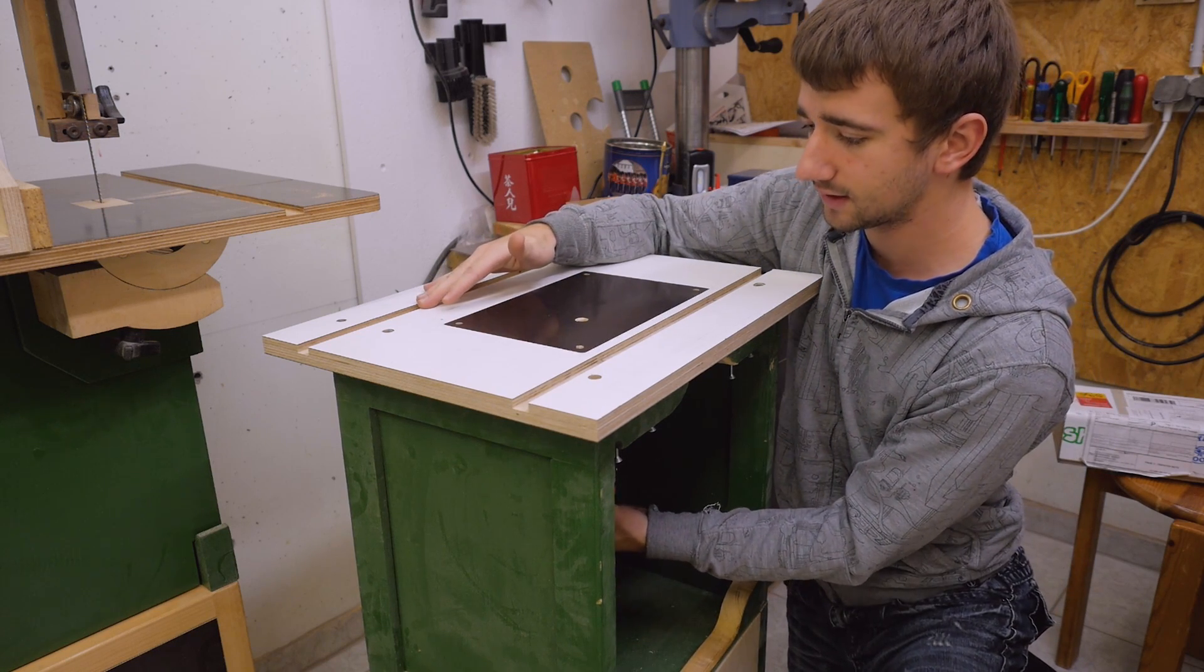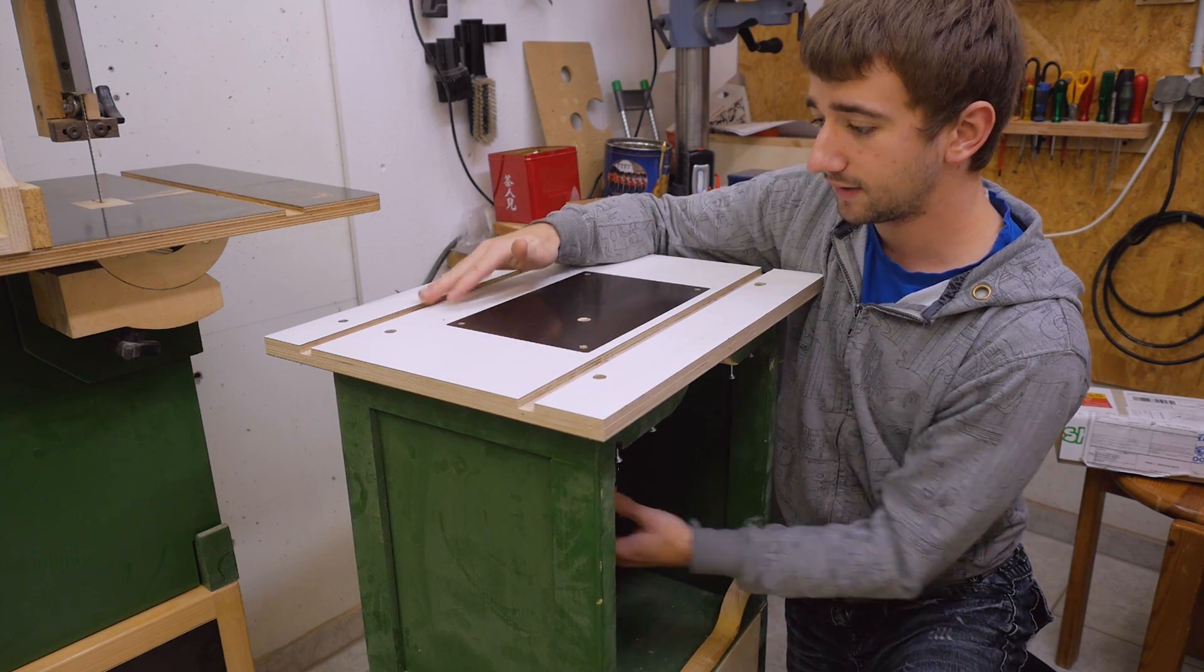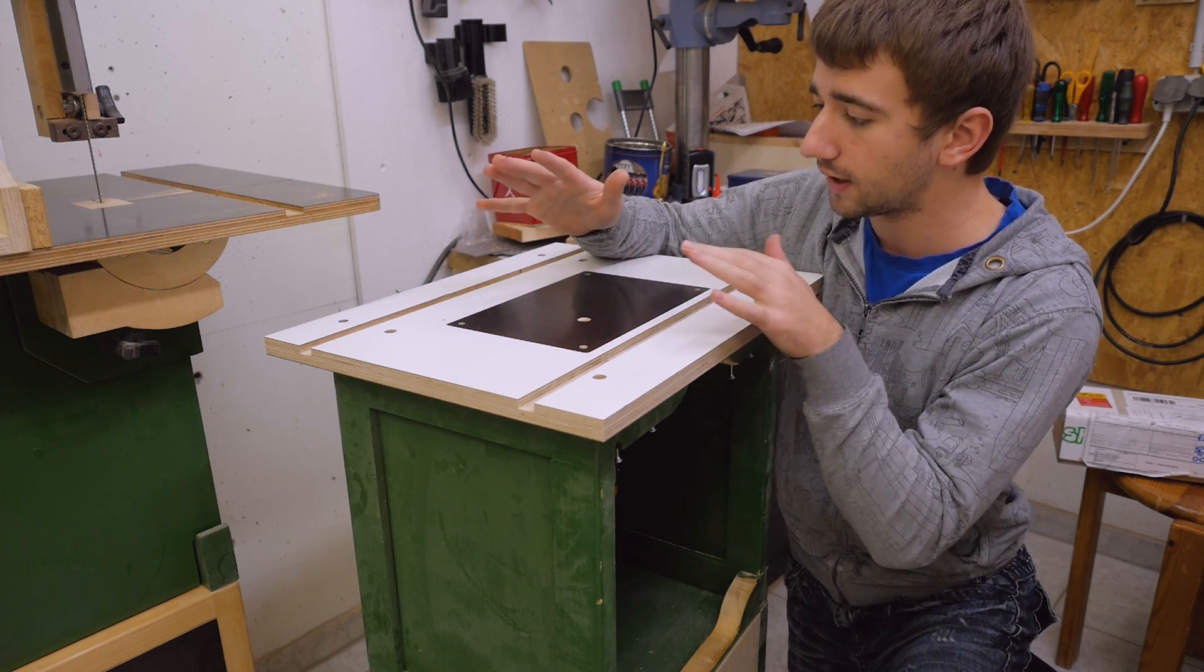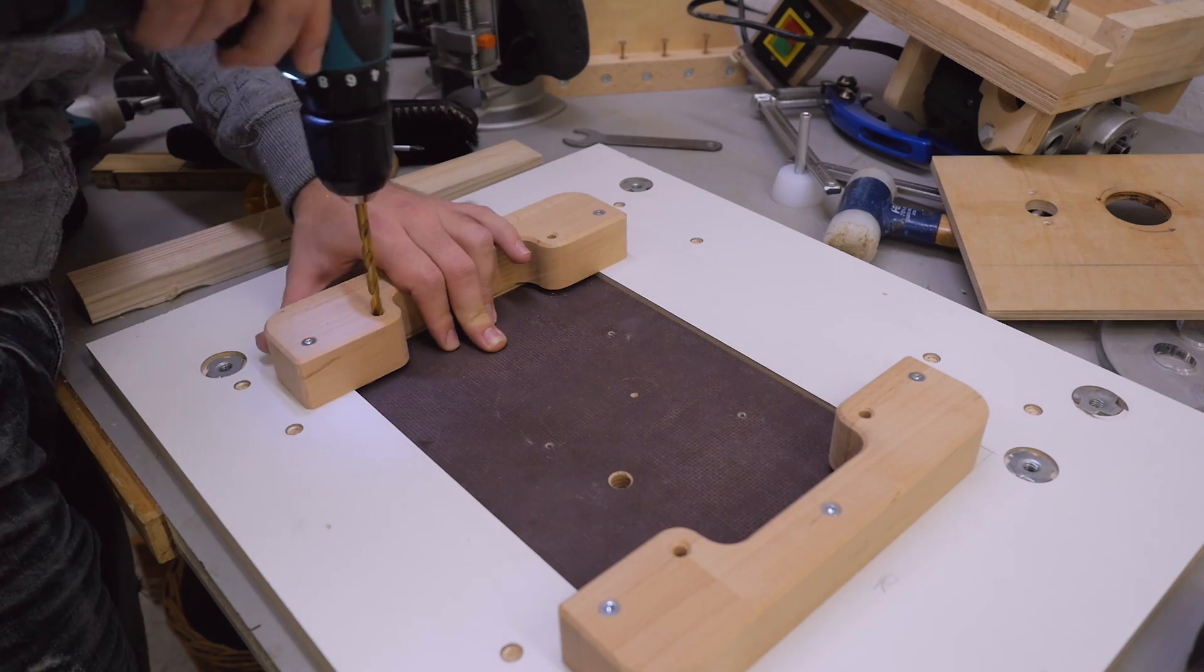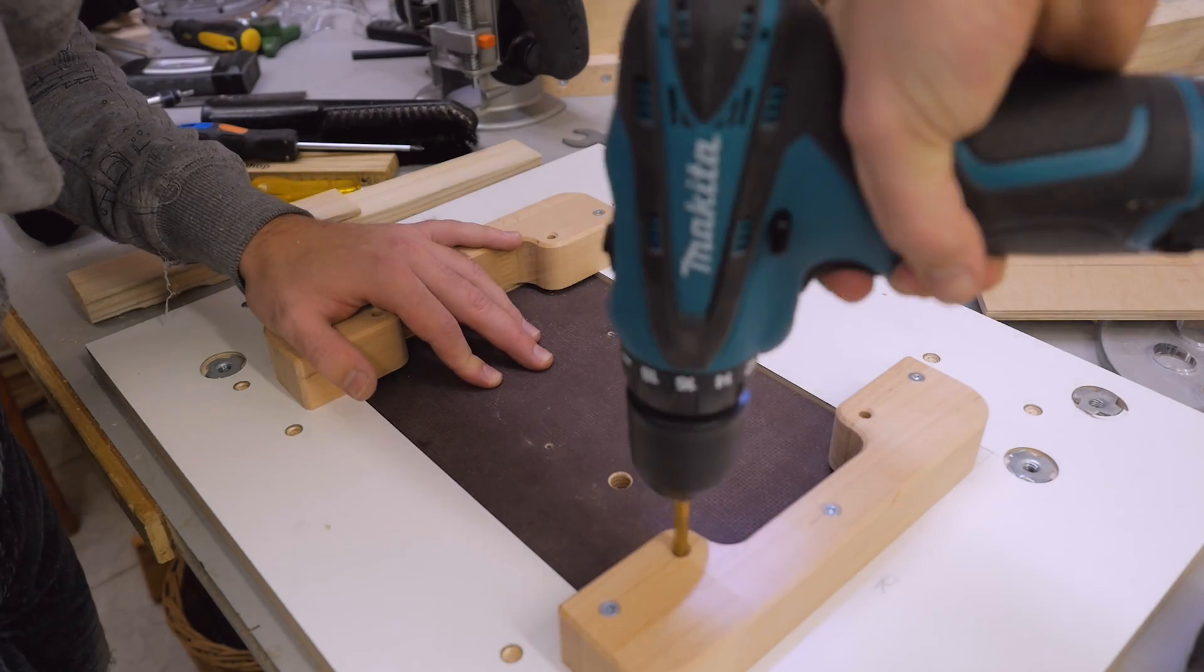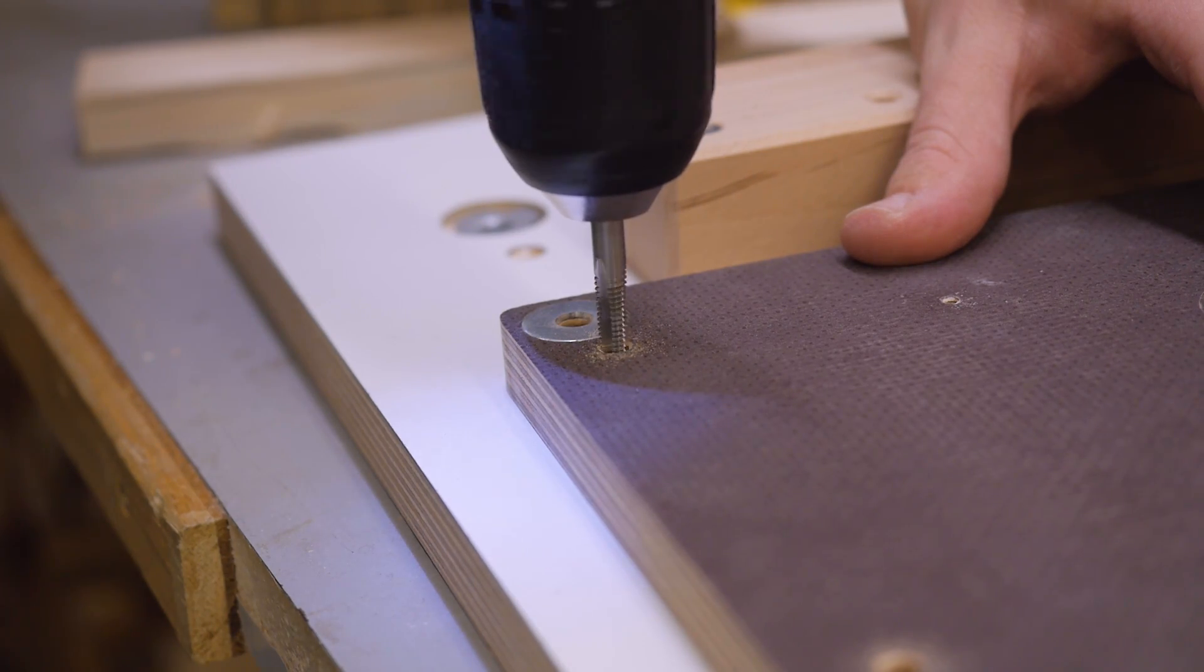Everything fits but the router can still do this and that should not happen during routing, so I need a way to secure the insert plate to the table. This time I transferred hole locations from the hardwood to the insert plate which I then again tapped.